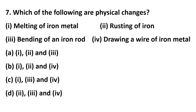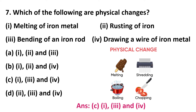Question 7: which of the following are physical changes? The options are melting of iron metal, rusting of iron, bending of an iron rod, and drawing a wire of iron metal. Physical change means changes in the physical appearance of an object — shape, size, color. Melting of iron is a physical change. Rusting forms a new brown powder substance so it is not a physical change. Bending of iron and drawing a wire of iron are physical changes as we are only changing the shape. The answer is option C: options 1, 3, and 4 are physical changes.